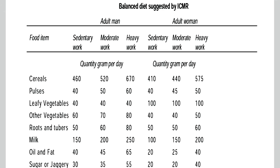Their requirement varies from sedentary to moderate to heavy work. For example, 460 grams of cereals is required per day for an adult man leading a sedentary lifestyle, whereas an adult man doing heavy work needs 670 grams of cereals per day. If you give the sedentary person 670 grams — the same as the heavy worker — the excess calories will be deposited as fat.